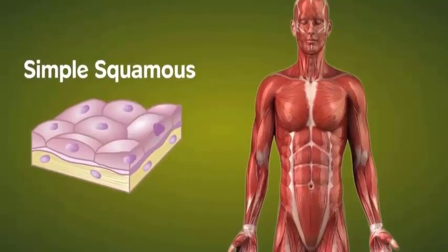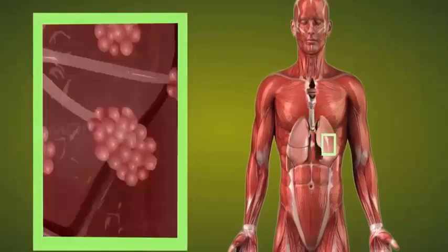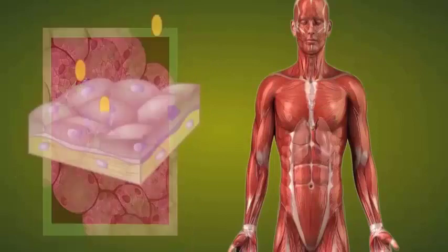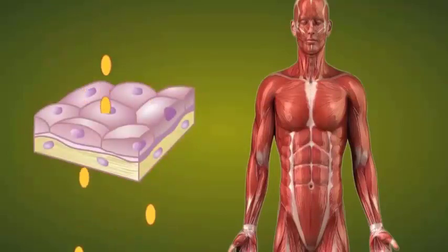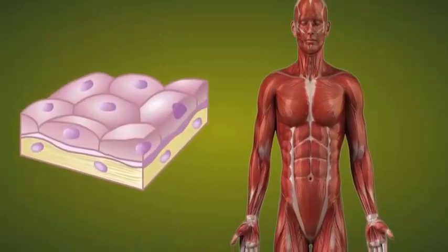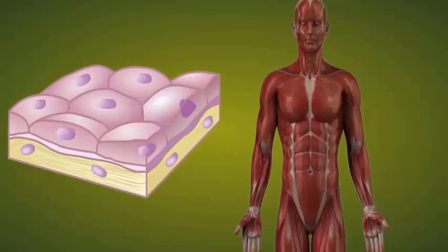The simple squamous epithelium is found in the lining of the alveoli and allows transport of small molecules across the membrane. It is extremely thin, flat, and single-layered.